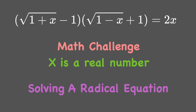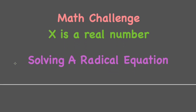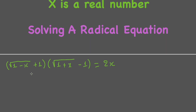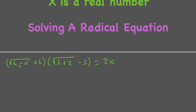First of all we have to provide the equation. We have the square root of (1 minus x) plus 1, multiplied by the square root of (1 plus x) minus 1, equal to 2x. When we have a problem under an even radical we have to set the condition for x, and in this case we can easily see that x is between the range of negative 1 to 1.